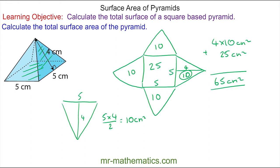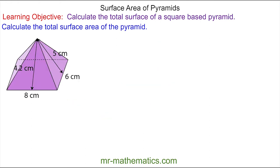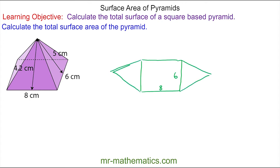Okay, let's try another question. Again we're going to draw the net. We now have a rectangle in the center which is eight by six, and we have two triangles on each edge — here and here — which are equal, where the height is five.